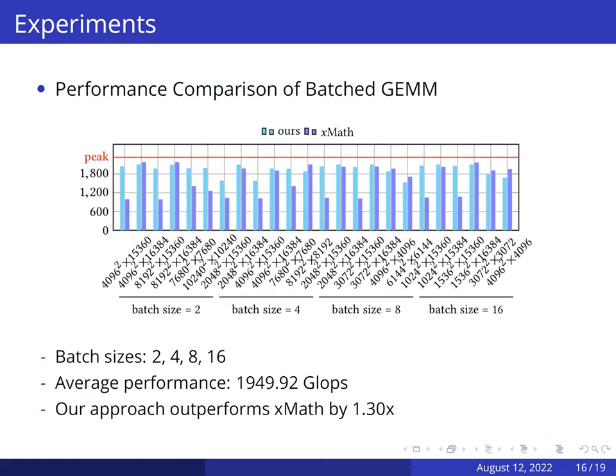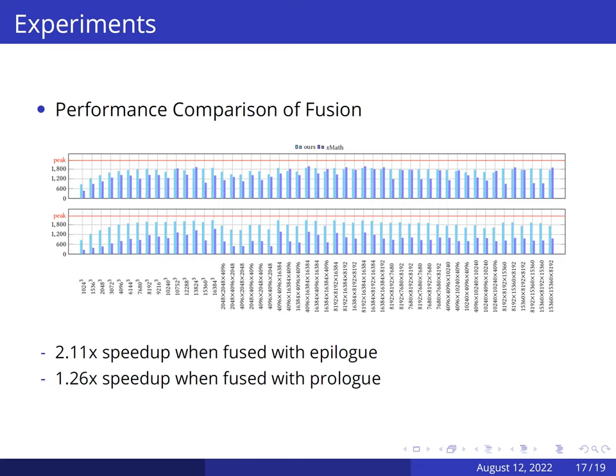Here we also give the results of batched matrix multiplication results. The average performance value of our work is about 1,900 GFLOPs. The batch dimension cannot be embedded into XMAS which decreases its performance. On average, our approach outperforms XMAS by 1.3x. For the fusion patterns, we compare with the baseline that does not perform fusion which invokes XMAS for matrix multiplication and executes the prologue and epilogue on management processing element. Our work outperforms the baseline by 1.26x for fusion with the prologue and 2.11x on average when fused with epilogue.